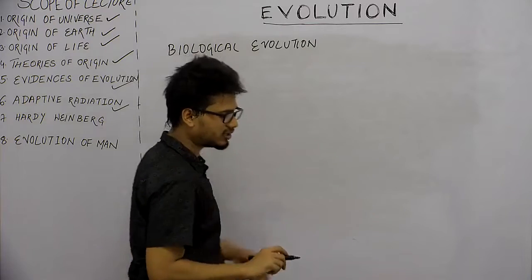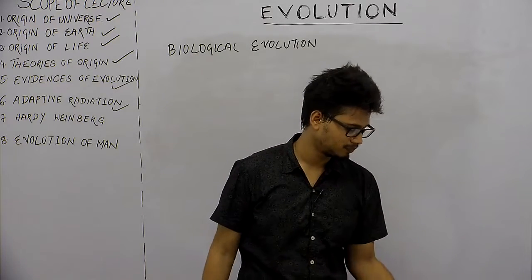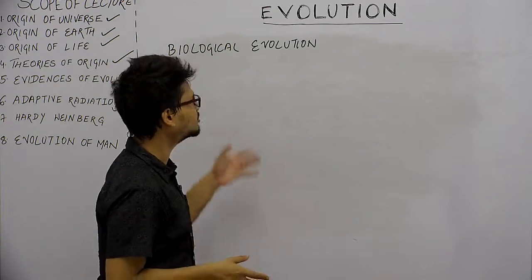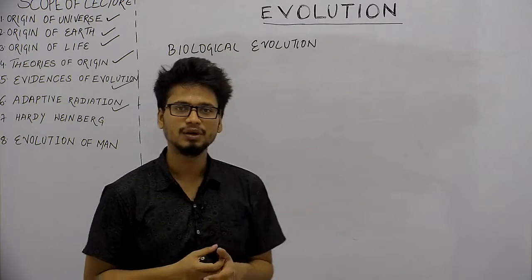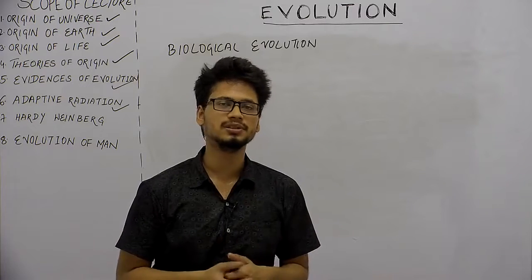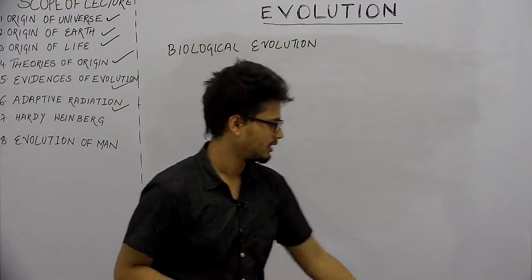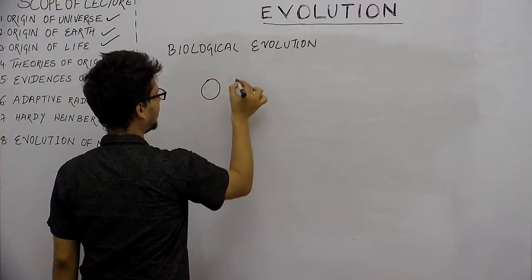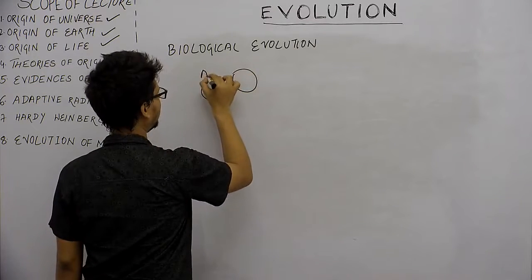So evolution basically started when two different cellular systems existed. In the textbook, the term evolution started the day when two different cellular systems were there. Let's say we have one cell A and another cell B.